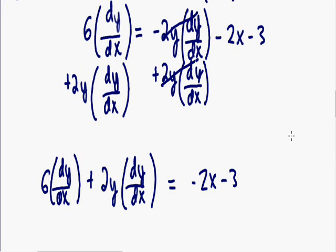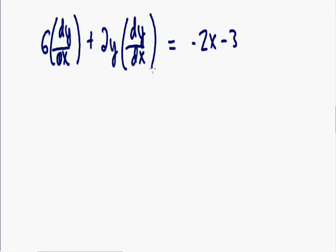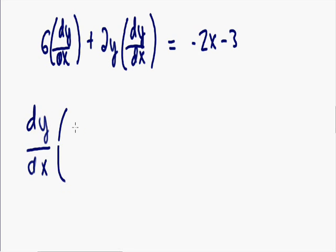The reason we brought all the dy/dx terms to the left hand side is we want to get dy/dx by itself. To do that, we need to factor out dy/dx from both terms on the left — notice they both have a dy/dx in common. After factoring, we're left with dy/dx times (6 plus 2y), and the right side stays exactly the same.